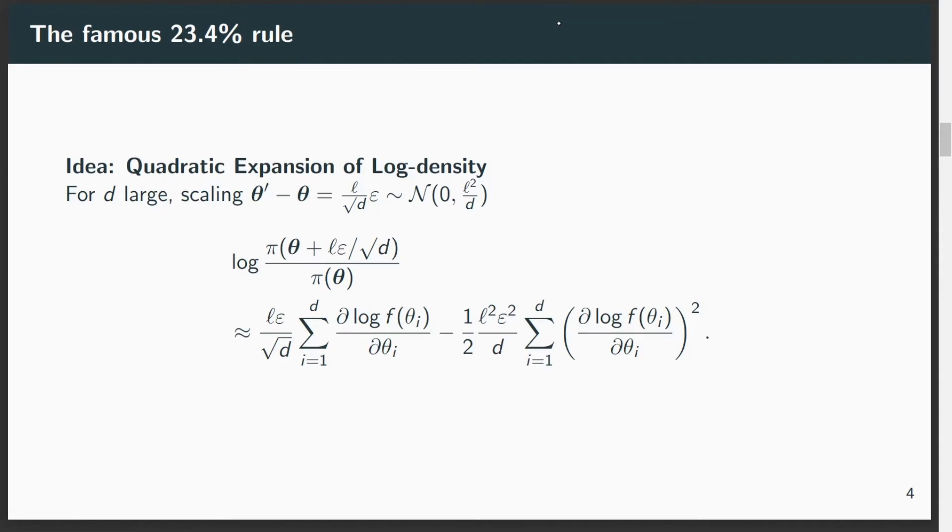What is going on in the original proof is roughly speaking, we look at the log of this acceptance probability, which is essentially the ratio between the proposed and the original value, and we can see that we find this quadratic expansion here.